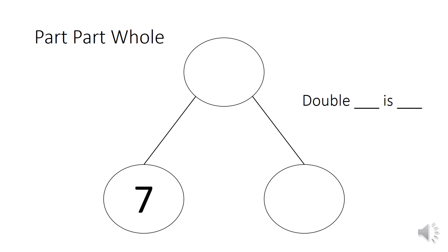This time we've got two missing, and if we look at our sentence both numbers are missing. What number are we doubling? Seven — well done. So I write seven in this circle and put 'double seven is' in the sentence. I'm going to try counting on: I put seven in my head, then use my fingers — eight, nine, ten, eleven, twelve, thirteen, fourteen. So double seven is fourteen.